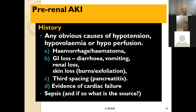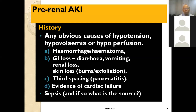In the history of pre-renal AKI, look for obvious causes of hypovolemia or hypoperfusion: massive hemorrhage or hematoma, GI losses due to diarrhea, vomiting, skin loss due to burns or exfoliation, third-space loss as in acute pancreatitis. Look also for evidence of cardiac failure and sepsis and its source. In this era of COVID, patients in severe condition also develop AKI due to hypoperfusion to many organs.